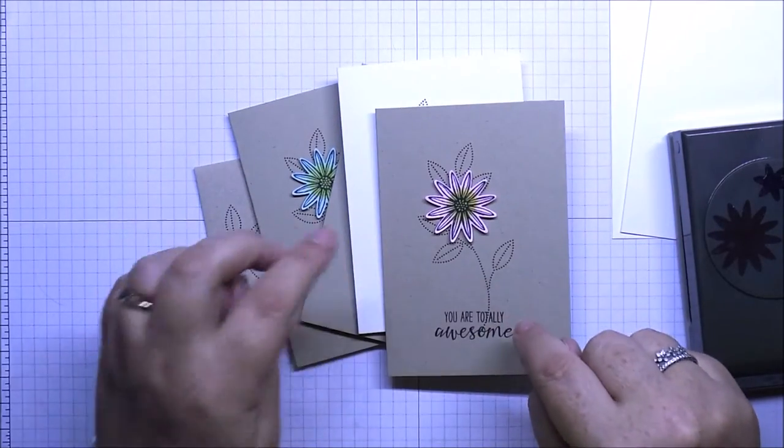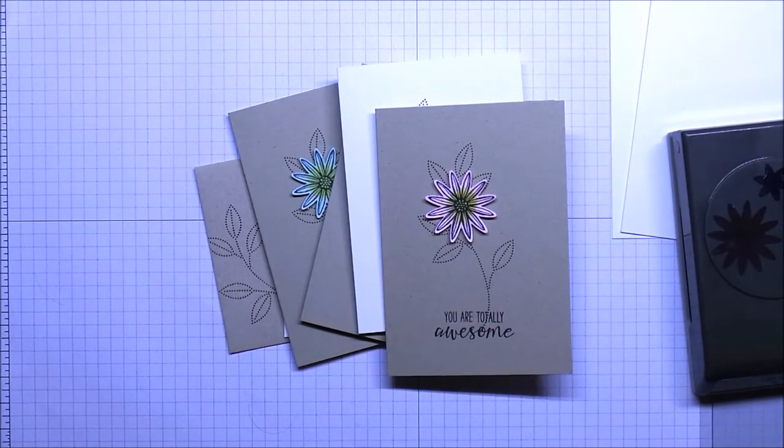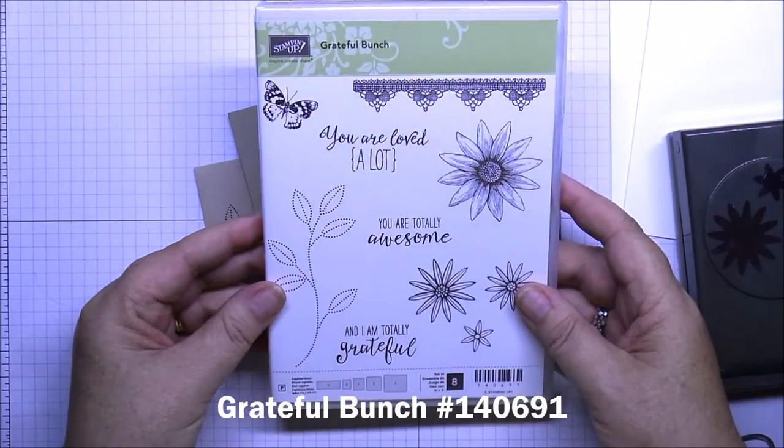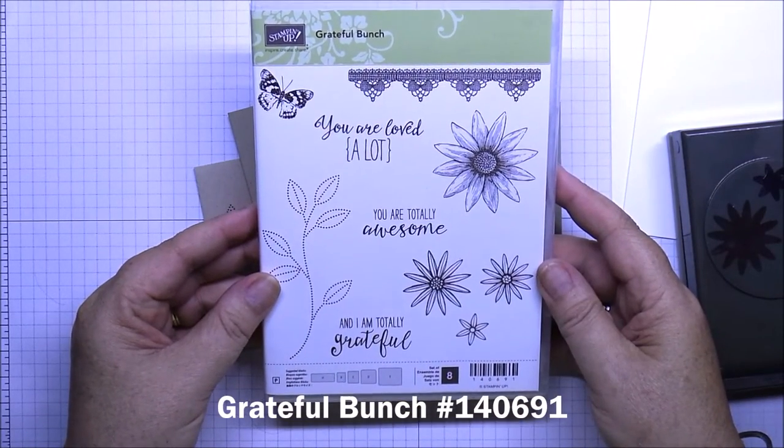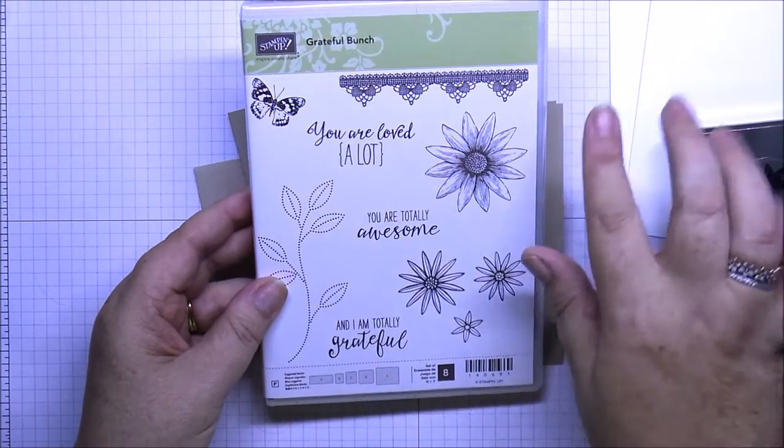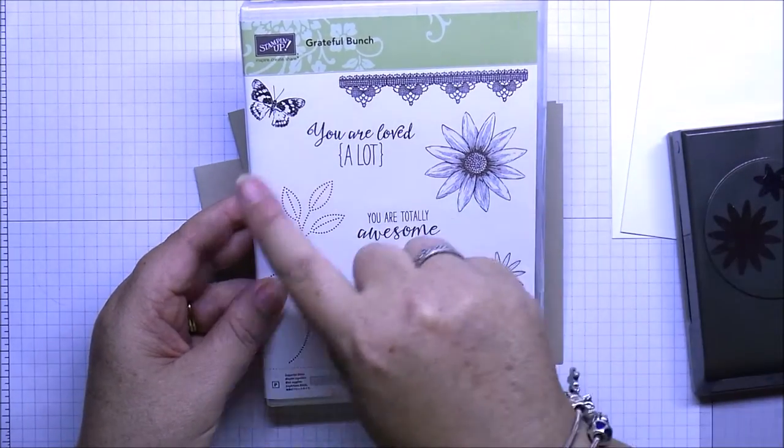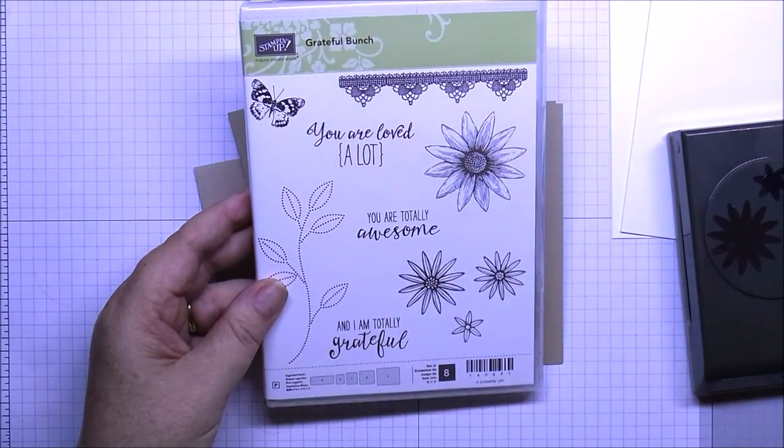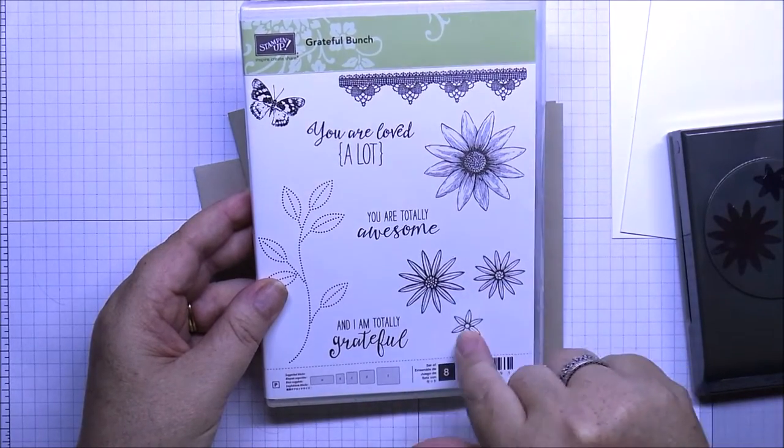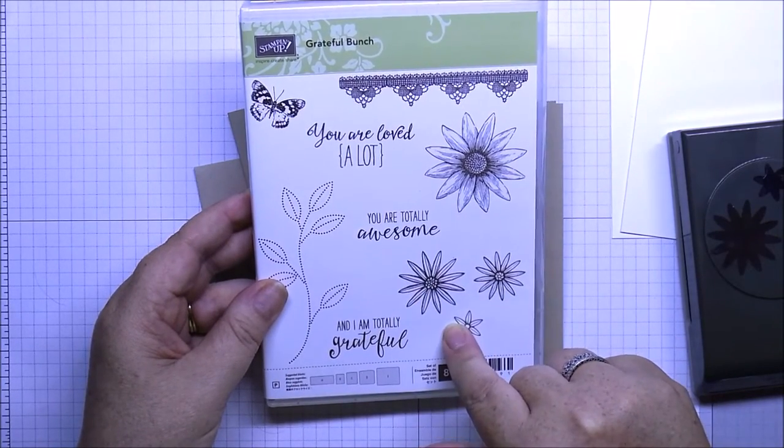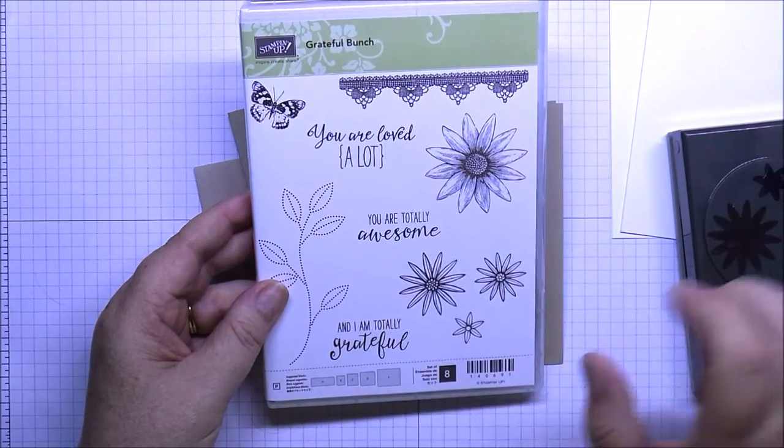Okay, so the stamp set that we're using for this card today is the Grateful Bunch stamp set which is new in the occasions catalog and it's got some great stamps. It's got a nice little lace border there, butterflies, some sentiments, leaves, a three set stamp there and a larger daisy there.